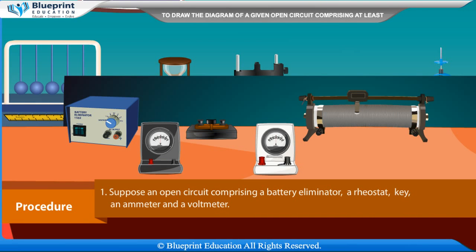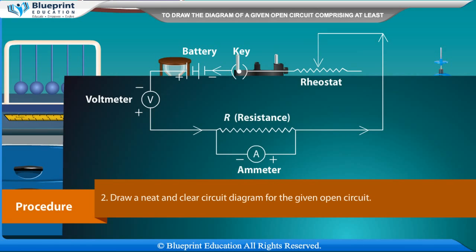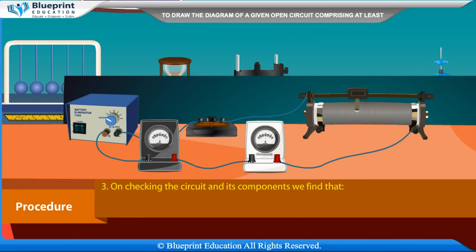Procedure: Suppose an open circuit comprising a battery eliminator, a rheostat, key, an ammeter and a voltmeter. Draw a neat and clear circuit diagram for the given open circuit. On checking the circuit and its components, we find that: